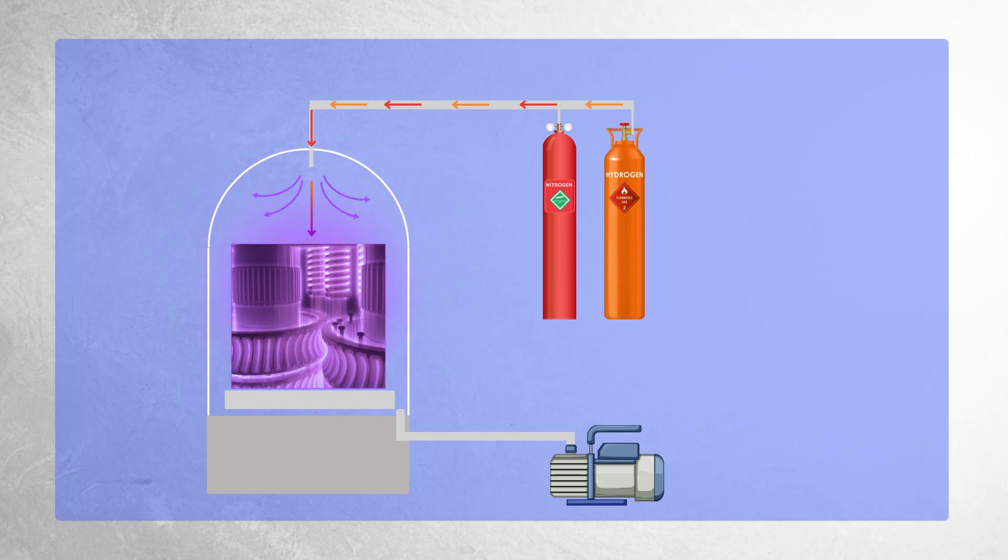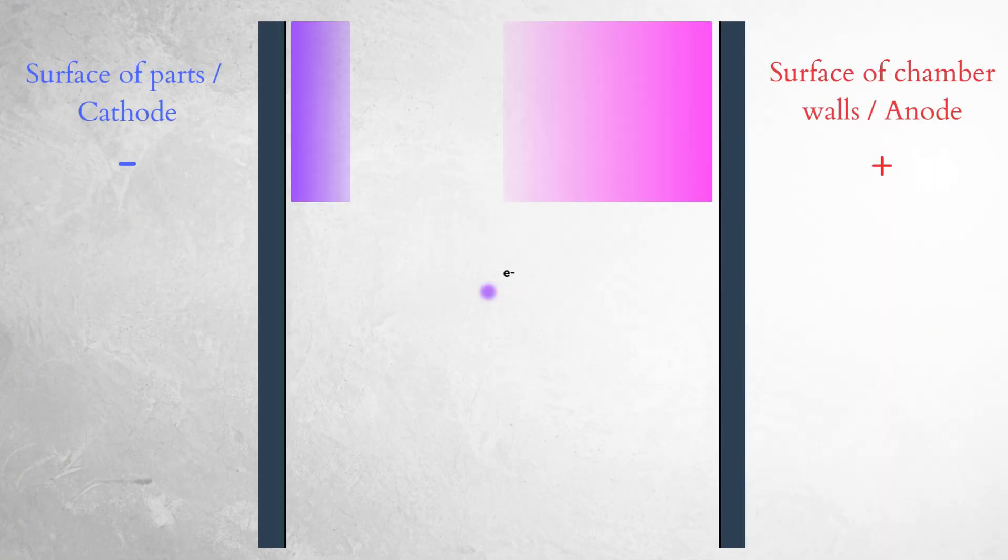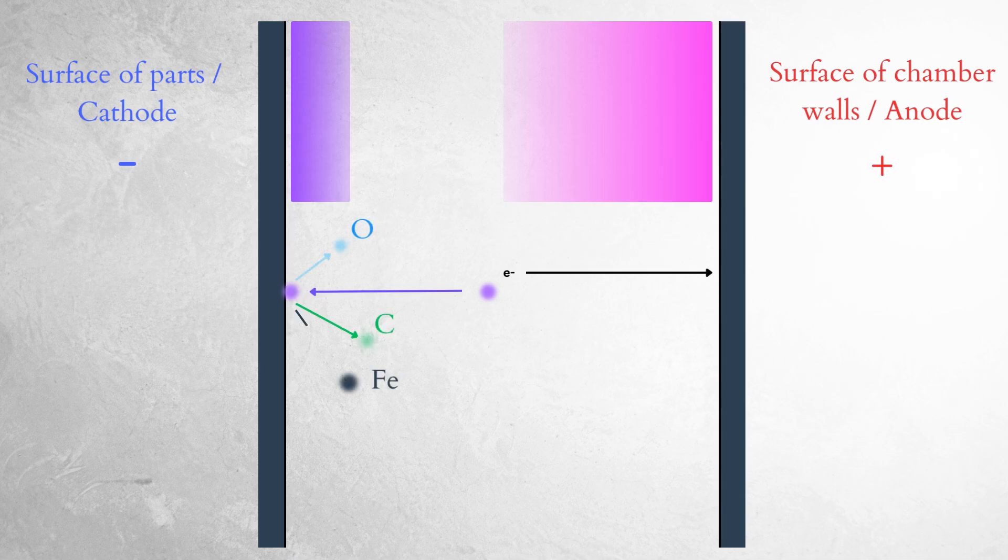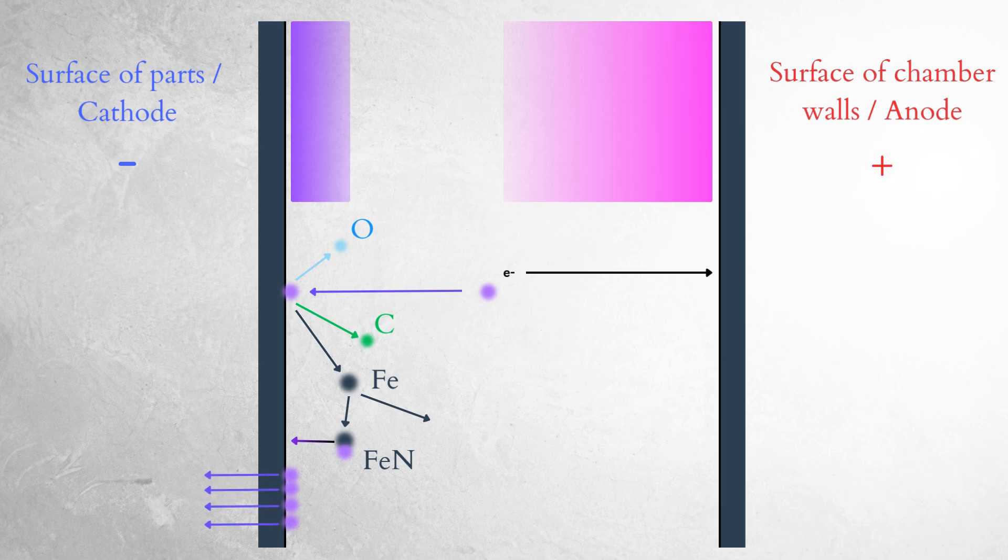Okay, we have created the plasma, but what exactly happens to the parts? As mentioned earlier, the positive ions move toward the cathode. Ions of nitrogen, hydrogen, and NH radicals bombard the cathode, and two important things happen: sputtering of the surface, removal of surface atoms, and nitrogen diffusion into the material.